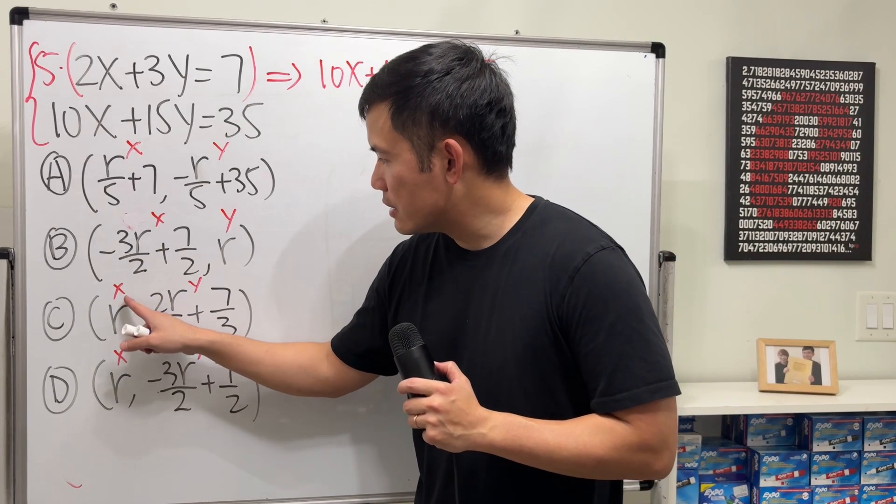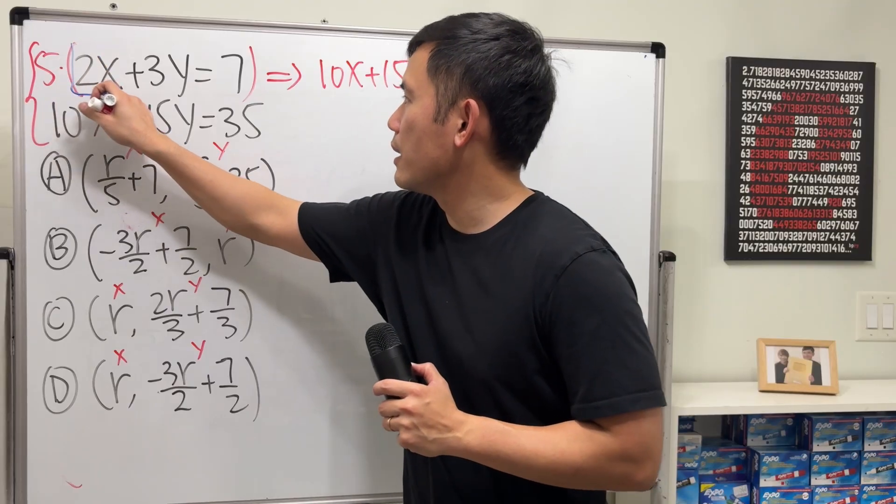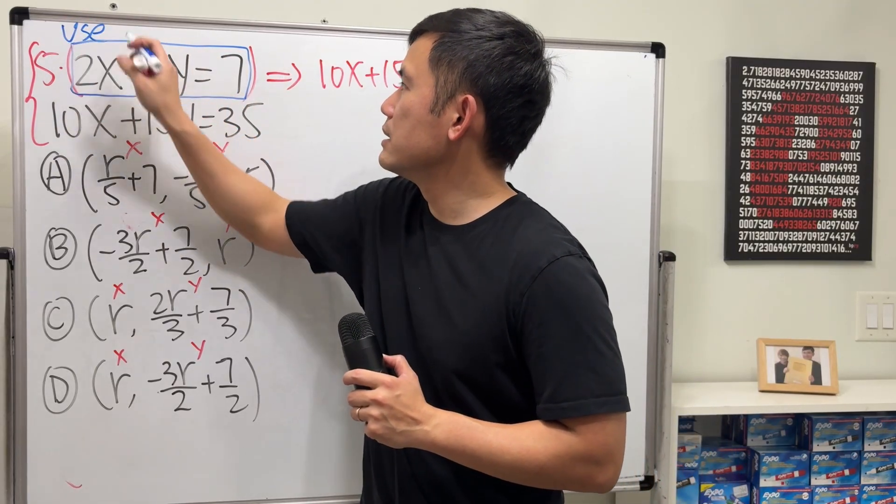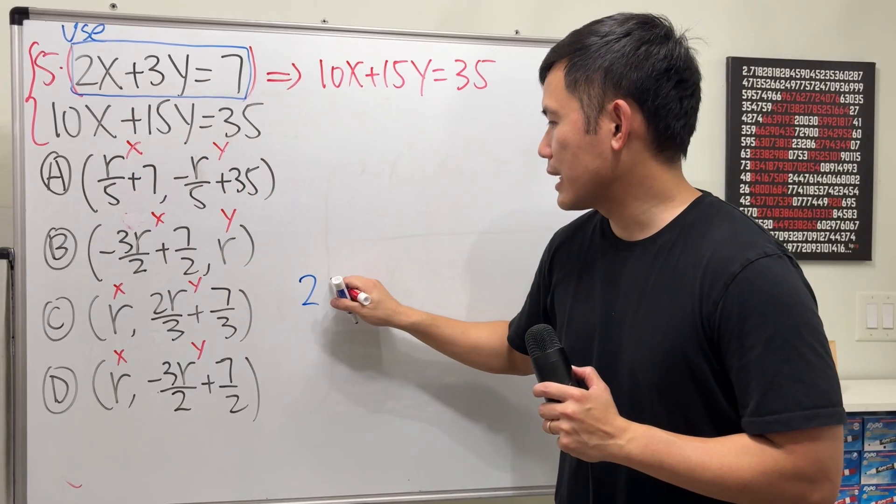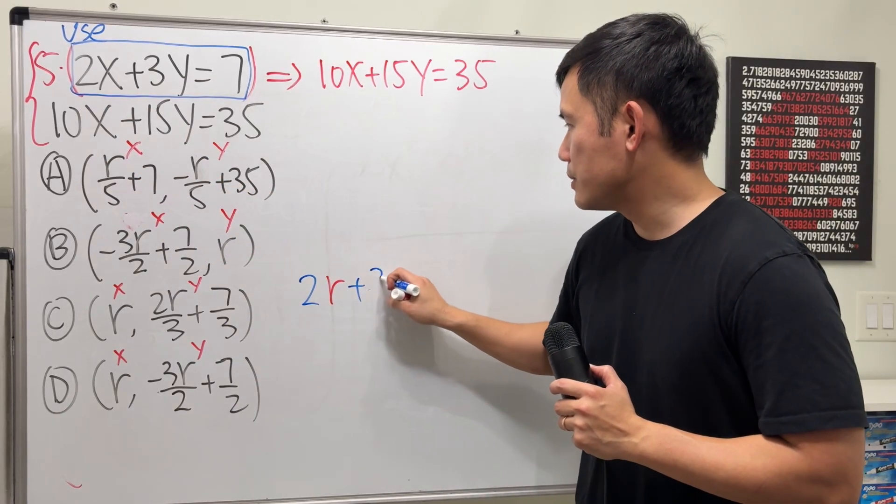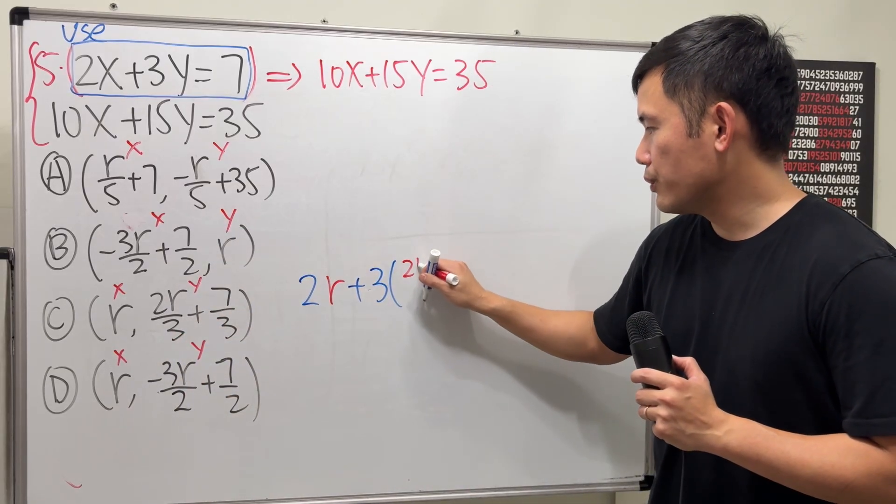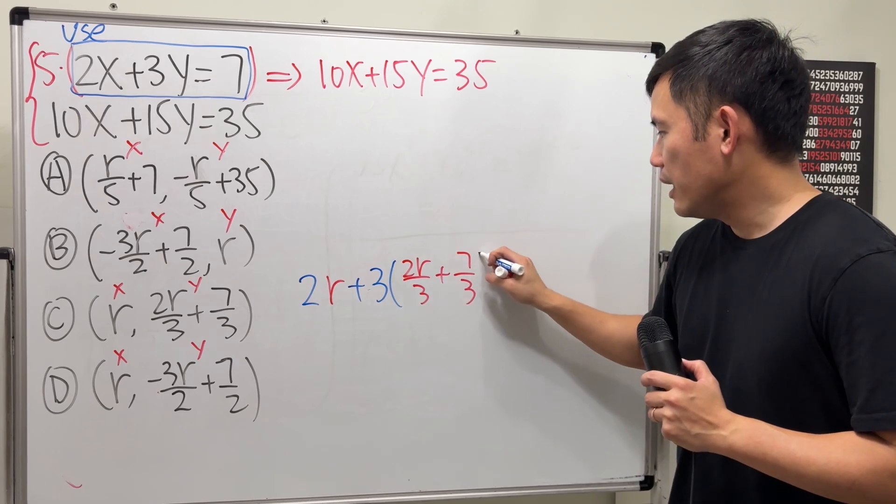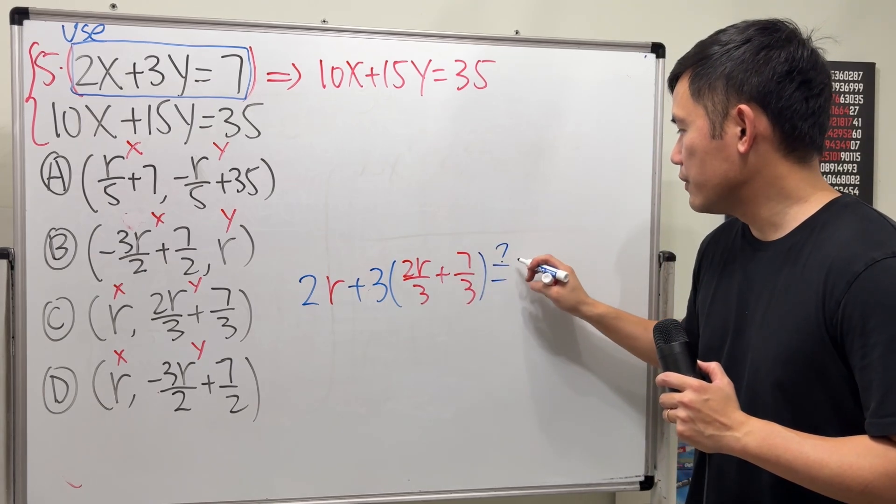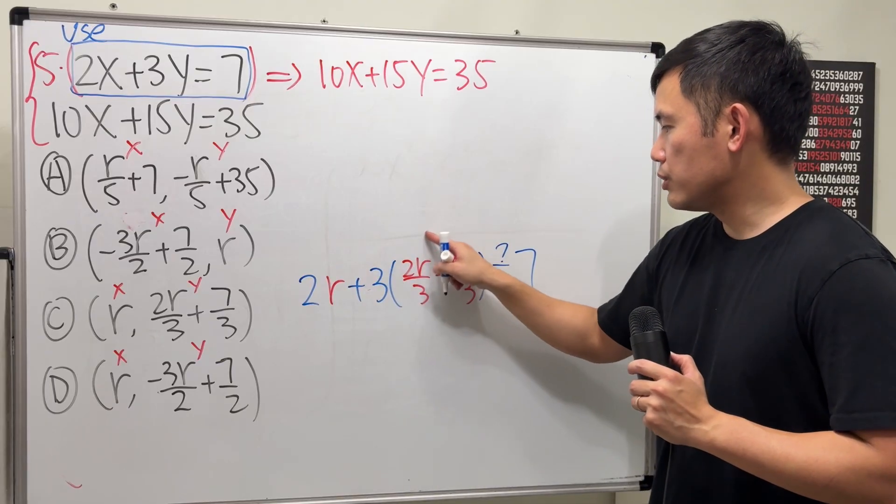Okay, I'm going to put x, put r for x into the first equation. Let's just use this right here. Use this. r in here, we get 2 times r plus 3, and the y is the second component, which we have 2r over 3 plus 7 over 3, and we will have to see if that will give us 7. We have to work this out, distribute the 3.